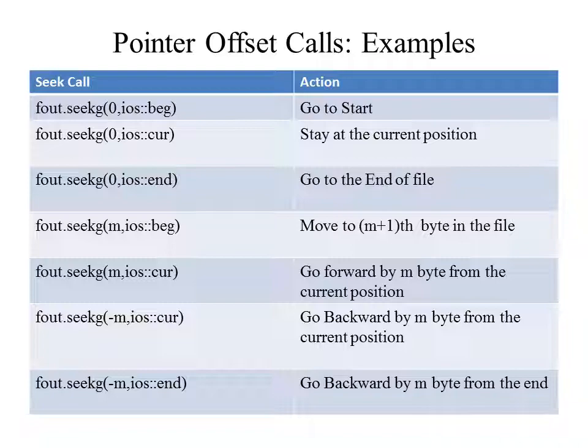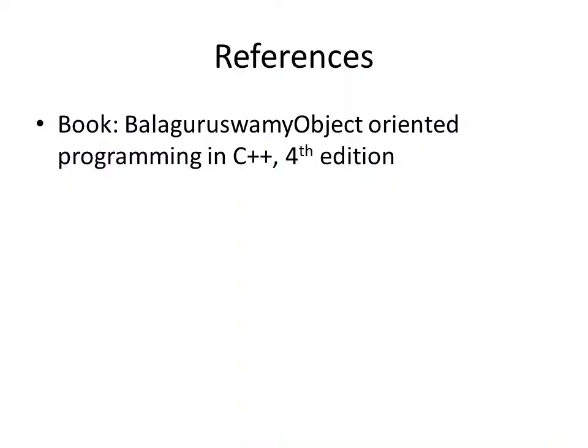This complete topic is from your book only. The main points are: we have two pointers — get pointer and put pointer; four functions to manipulate them — seekg, seekp, tellp, and tellg; seekg and seekp take two arguments — offset and reference position. You should know the meaning of offset and reference position, and that reference position can take only three values: beginning, current, and end. Thank you.